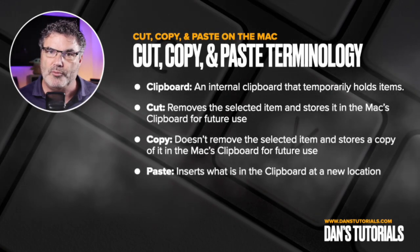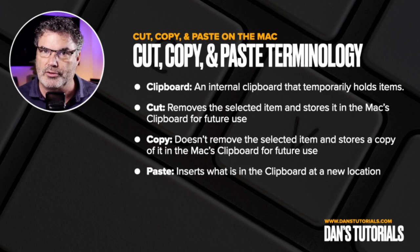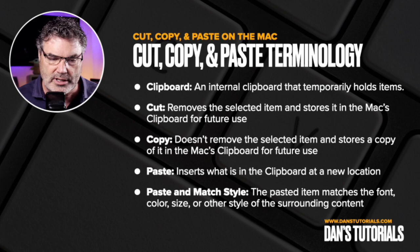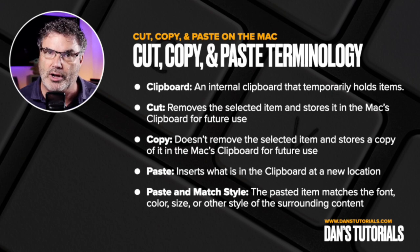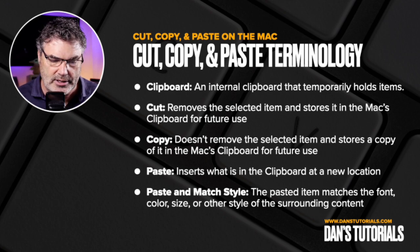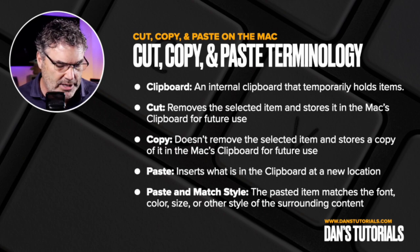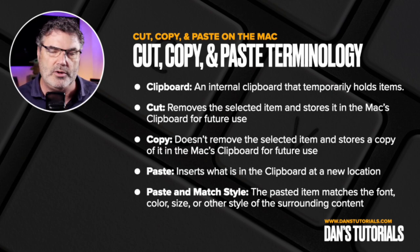Once it's in the clipboard, we can paste it. This will insert whatever we copied or cut from that clipboard into a new location such as another document. There's one other term I want to cover: paste and match style. When we cut or copy something, not only does it copy the text but it also copies the format of that text — bold, italic, etc. If you don't want that, you can paste and match style, which will paste whatever we have in the clipboard and match the style of where we're pasting it.